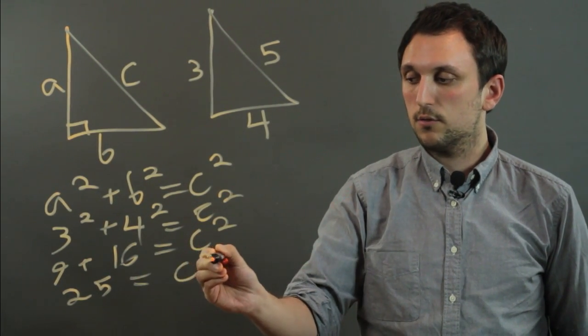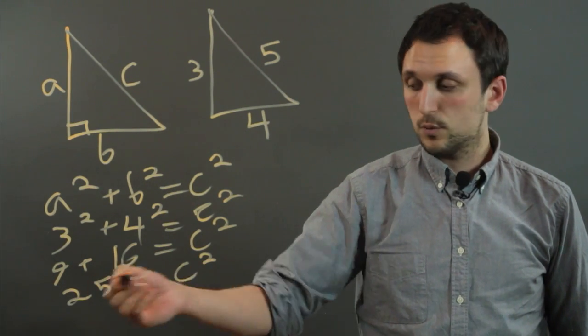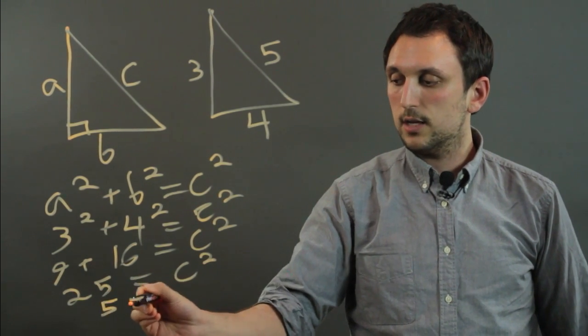So we have C squared equals 25, and if you take the square root of both sides, you get 5 equals C.